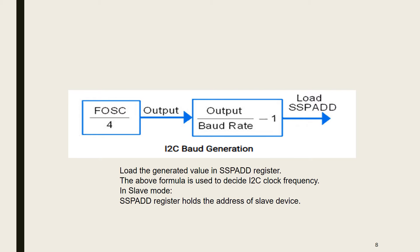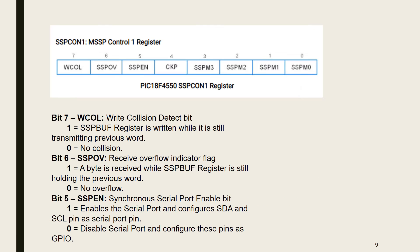For baud rate generation, a particular formula is followed. Load the generated value into the SSP-ADD register. In slave mode, the SSP-ADD register holds the address of the slave device. Now let us have an overview of the registers involved.